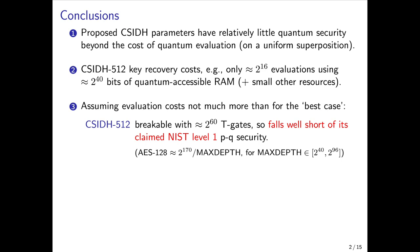CSIDH-512 falls well short of the claimed NIST level 1 post-quantum security, which corresponds to AES-128 key search. NIST has estimated that to cost about 2^170 T-gates divided by max depth, where max depth is the maximum feasible quantum depth that can be implemented, and NIST estimates that to be between 2^40 on the low end and 2^96 on the high end. Another parameterization is CSIDH-1024, which was proposed for NIST level 2. We find that to be breakable with about 2^72 T-gates and only 2^44 bits of quantumly accessible RAM.